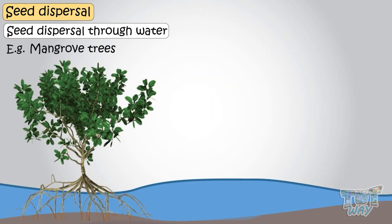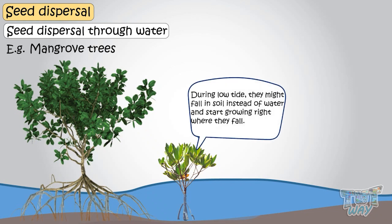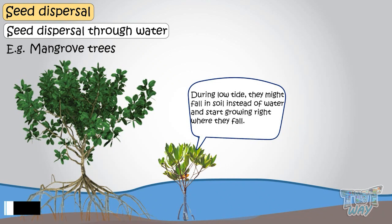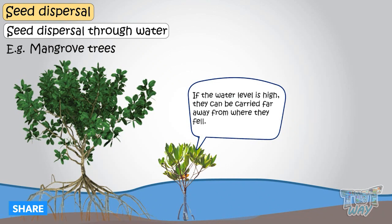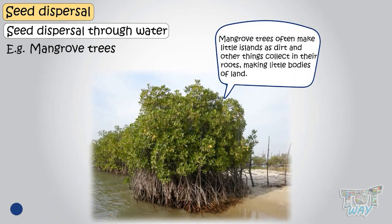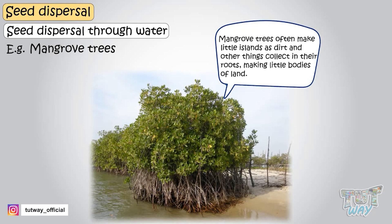Mangrove trees live right in the water. Their seeds fall from the tree and grow roots as soon as they touch any kind of soil. During low tide, they might fall in soil instead of water and start growing right where they fell. If the water level is high, however, they can be carried far away from where they fell, and the mangrove trees often make little islands as dirt and other things collect in their roots, making little bodies of land.